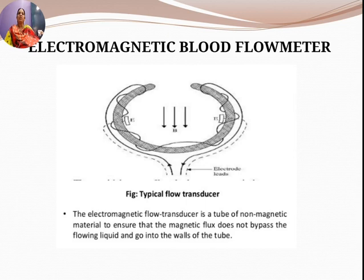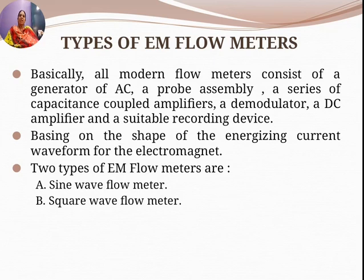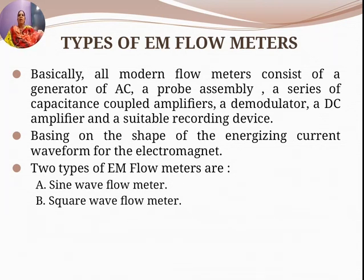The electromagnetic flow transducer uses a tube of non-magnetic material to ensure that magnetic flux does not bypass the flowing liquid and go into the walls of the tube. All modern flow meters consist of a generator of AC, a probe assembly, a series of capacitor-coupled amplifiers, a demodulator, a DC amplifier, and a suitable recording device.